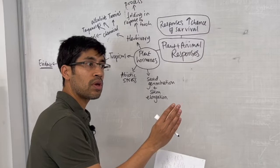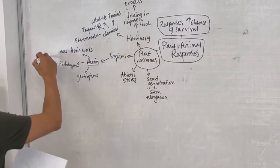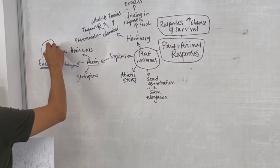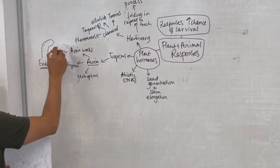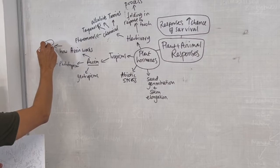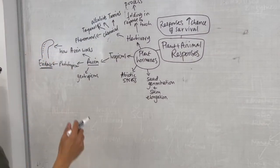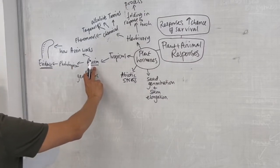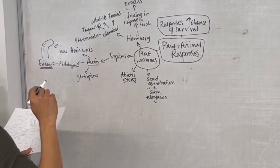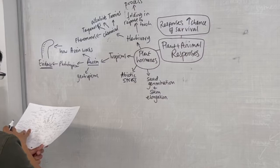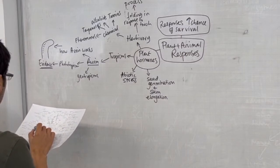That's all the stuff on auxin's involvement in causing proton transport into the cell wall area, activating the enzymes, the expansins, breaking the cross links between cellulose in the cell wall, allowing the cell wall to become flexible so that when water enters the cell, the cells elongate. How auxin works or how auxin causes cell elongation.